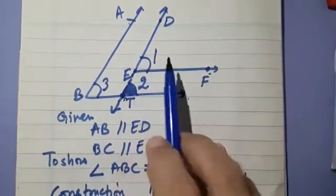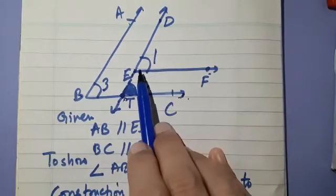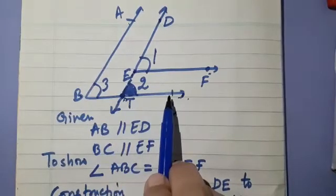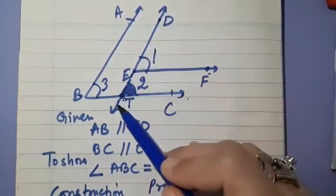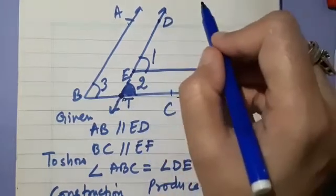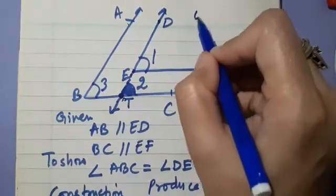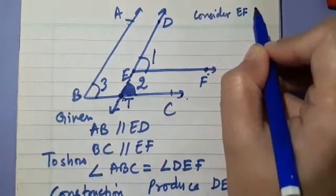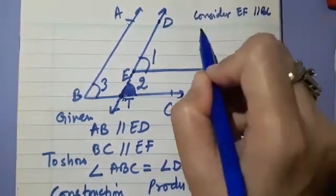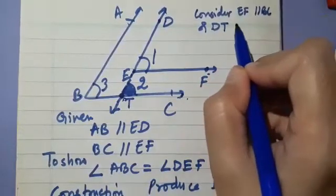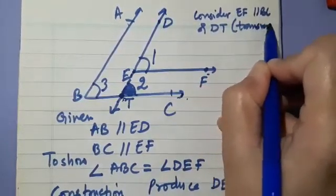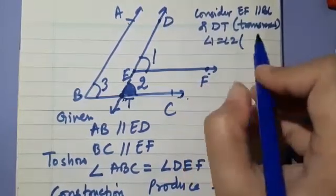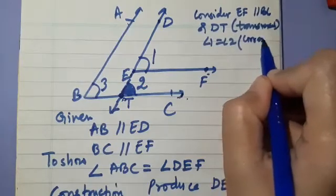You will begin with: consider EF parallel to BC and DT is transversal. So I am writing here, consider EF parallel to BC and DT transversal. We see that angle 1 is equal to angle 2 because they are making a pair of corresponding angles.